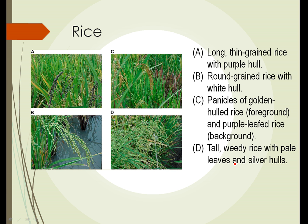There are different types of rice. Type A is a long, thin-grained rice with a purple hull. Type B is a rounder-grained rice with a whitish hull. Type C is a golden-hulled rice with some purple-hulled, purple-leafed rice visible in the background. Type D is a light-hulled, weedy type of rice. In all cases, the grain of rice itself — when removed from the hull and husk — is white, regardless of the color of the outside.